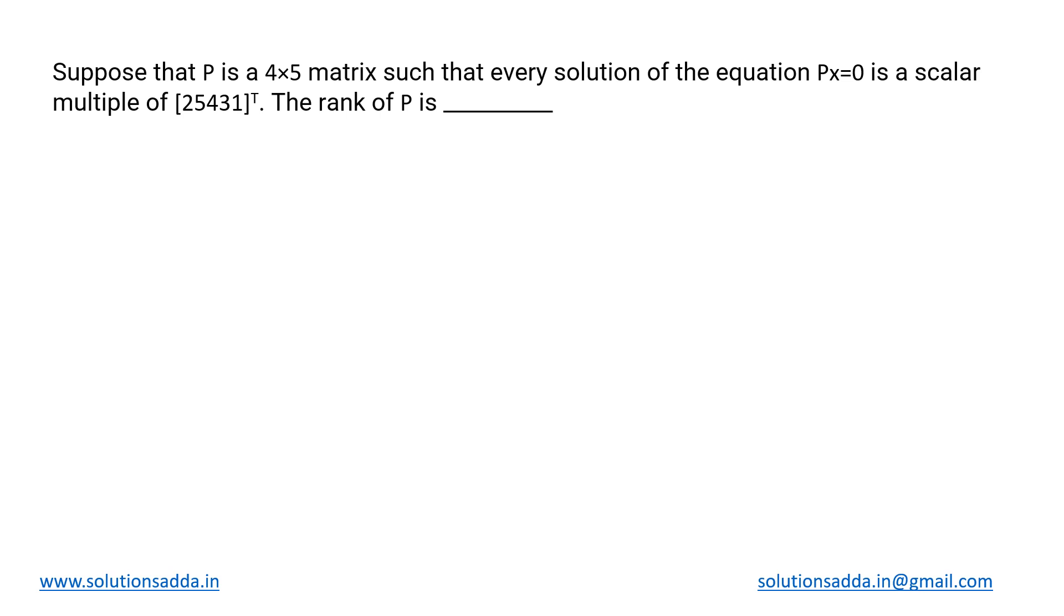This is an engineering mathematics question. We have matrix P, which is a 4×5 matrix, meaning it has 4 rows and 5 columns. We can say that P constitutes 5 column vectors. Let's call them c1, c2, c3, c4, and c5. These are all the column vectors, and there are 5 of them because it's a 4×5 matrix. This is how we can represent the given matrix P.